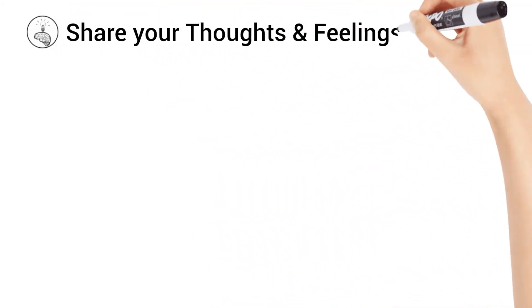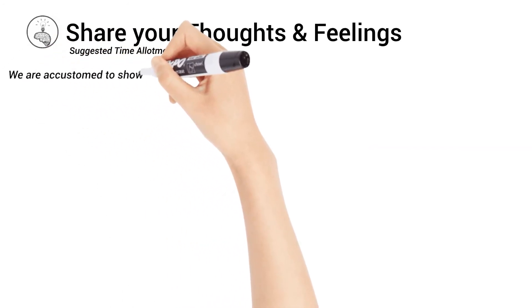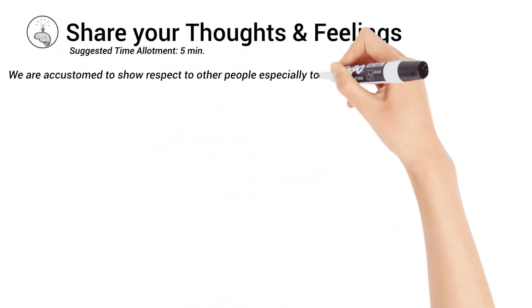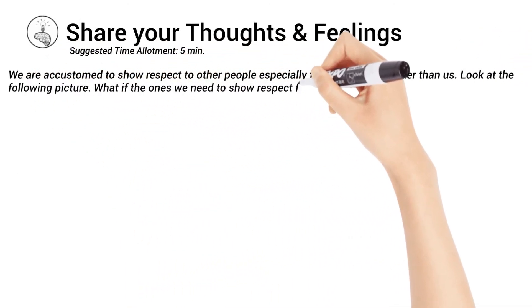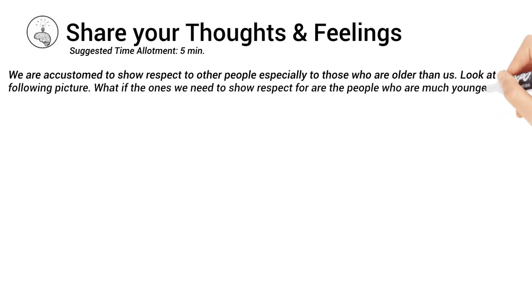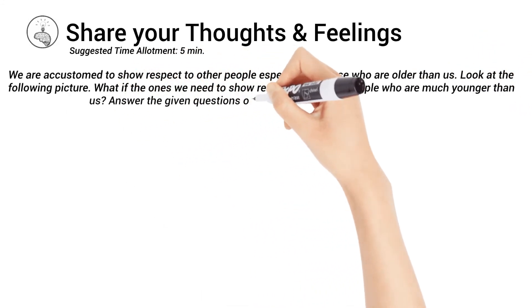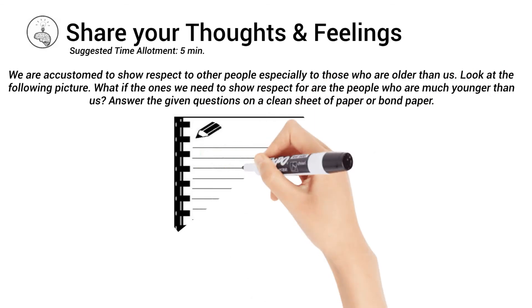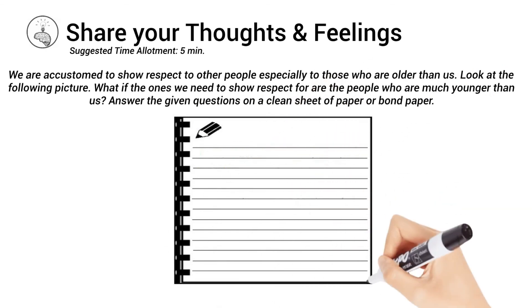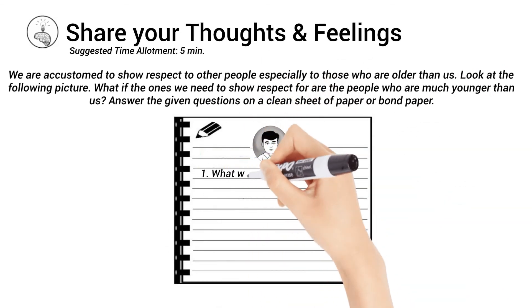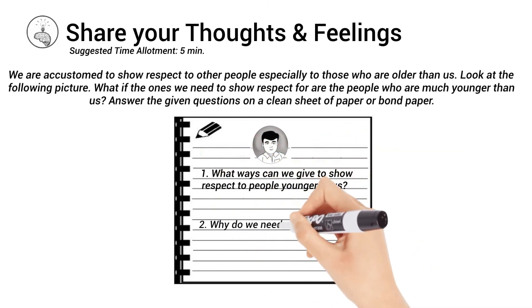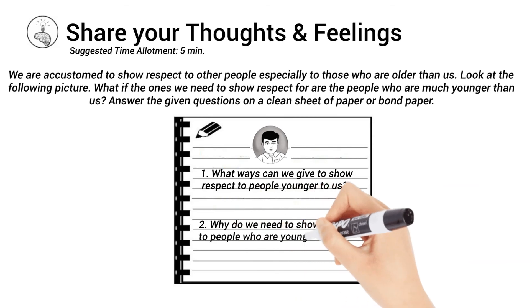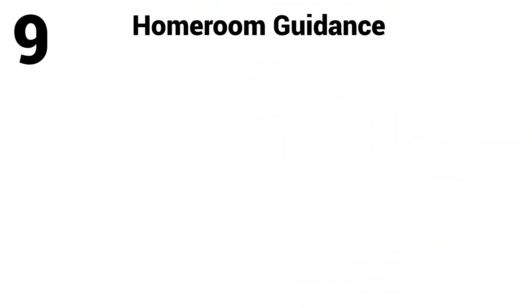Share your thoughts and feelings. Suggested time allotment: 5 minutes. We are accustomed to showing respect to other people, especially to those who are older than us. Look at the following picture. What if the ones we need to show respect for are people who are much younger than us? Answer the given questions: What ways can we show respect to people younger than us? Why do we need to show respect to people who are younger than us?